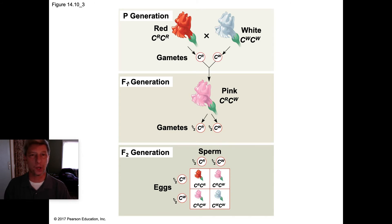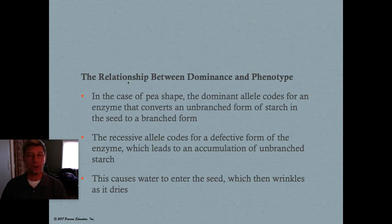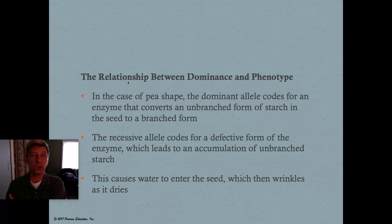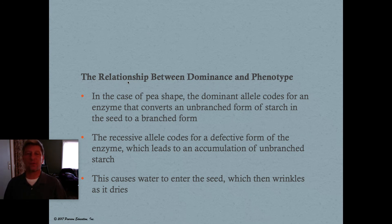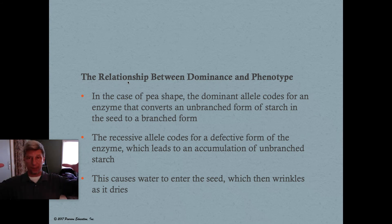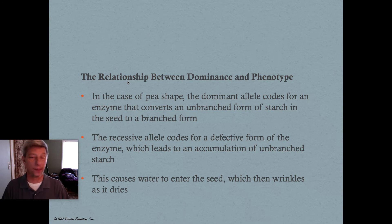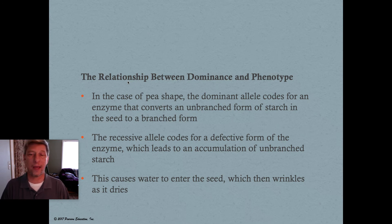That's a 1:2:1 ratio instead of the 3:1 that Mendel saw in his pea plants. In the case of pea shape — round versus wrinkled — the dominant allele codes for an enzyme that converts an unbranched form of starch in the seed to a branched form, keeping the pea round. The recessive allele codes for a defective form of the enzyme, leading to an accumulation of unbranched starch. This allows water to enter the seed, which then wrinkles when it dries up — that's why you see wrinkled peas.